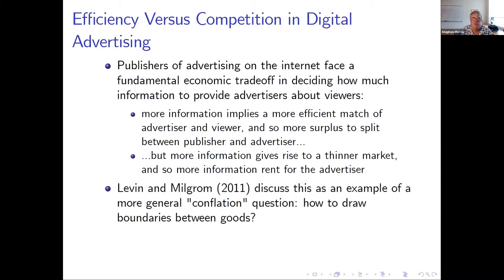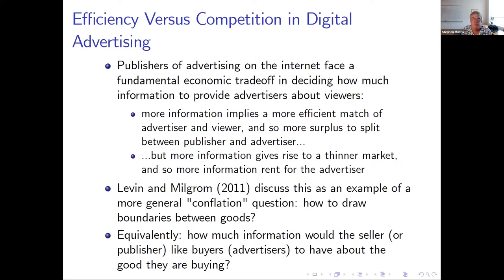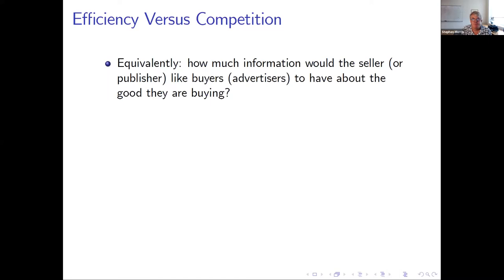Levin and Milgram used the term "conflation," taking this example and more generally posing the question that this is fundamental in all of economics. We talk as if it's obvious how to define a good, but there's always some decision about how finely to partition what's treated as a different good in the market. So if you look at it from the seller's point of view, the question is: as a seller, how much information would you like buyers — in the case of digital advertising, the advertisers — to have about the good that they're buying?